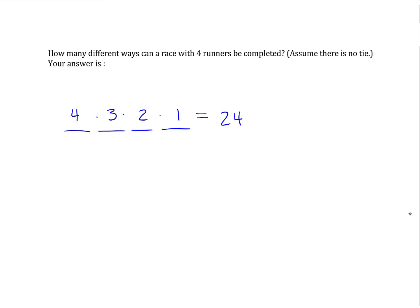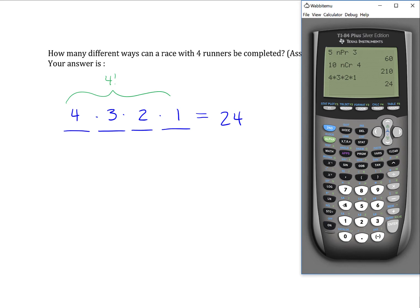But bear in mind that this situation can be simplified using a factorial. So if you press 4 and then the math key, come over to the PRB menu, the fourth item down is an exclamation point which will do a factorial for you. You can approach the solution that way as well.